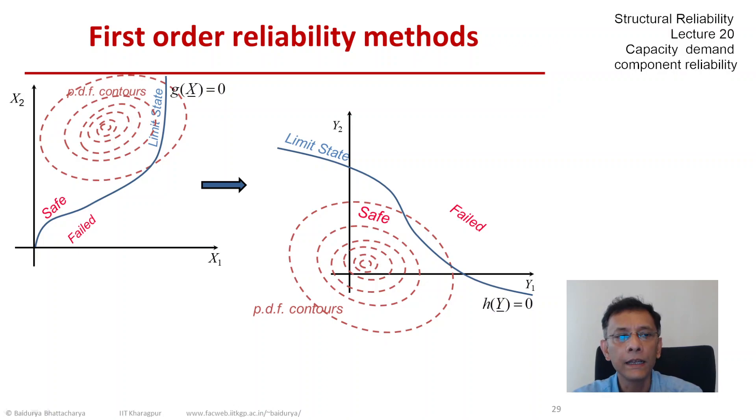This map t brings everything to this new y space. Two things happen. One is the density function obviously moves and may take on a different shape depending on the nature of the map, and also the limit state looks very different or could look very different.